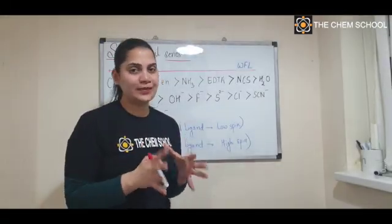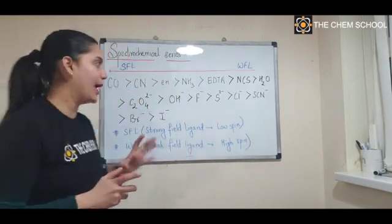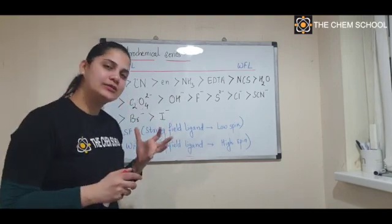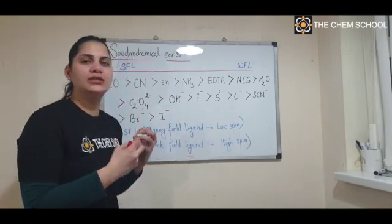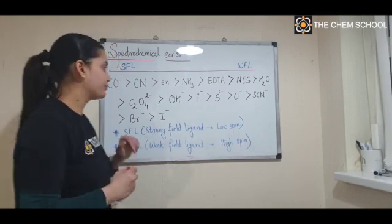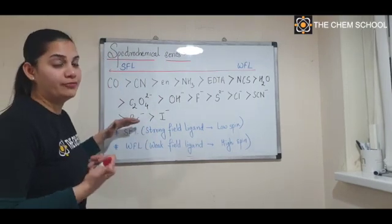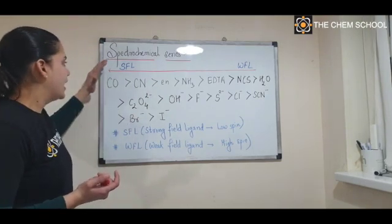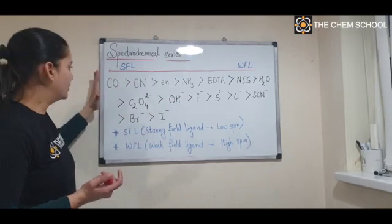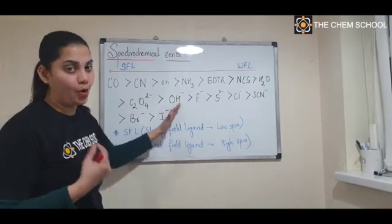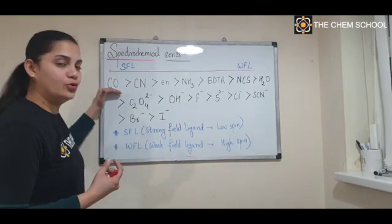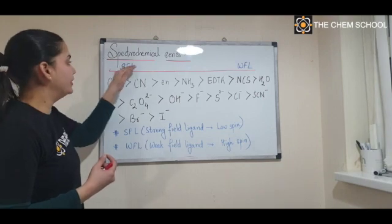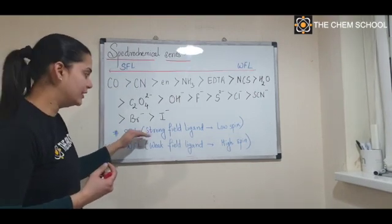Let's start with the spectrochemical series. The sequence is very important — you need to memorize it, not in exact order but using some tricks. The ligands at the extreme left of the series are all strong field ligands.